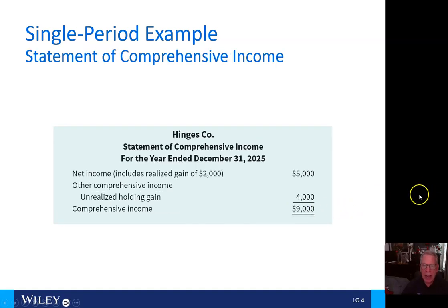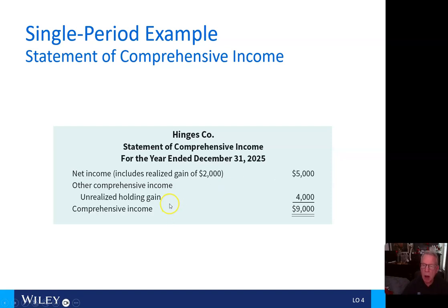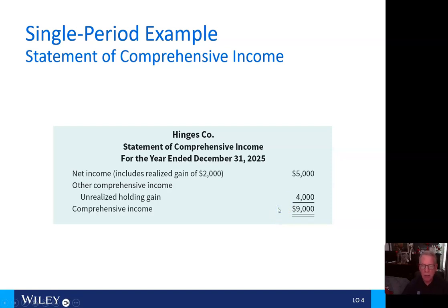As we look at the statement of comprehensive income, the net income includes the realized gain of $2,000 for a total of $5,000. And we have other comprehensive income — an unrealized holding gain of $4,000 — so our comprehensive income is $9,000.